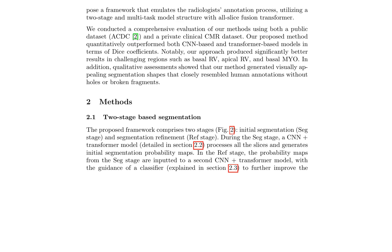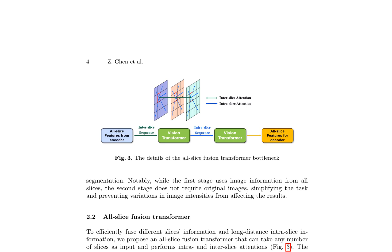The all-slice fusion transformer allows for efficient processing of entire volumes, capturing long-range dependencies and contextual information across slices, and is a critical component in the proposed architecture designed to efficiently fuse information from different slices and capture long-distance intra-slice dependencies. Placed at the bottlenecks of both the SEG and REF stages, this module combines U-Net with selective kernel convolutions and vision transformer. Images from all slices are concatenated along the batch dimension and fed into a CNN encoder, whose bottleneck features are then passed through two consecutive transformers performing inter-slice and intra-slice attention respectively. A CNN decoder with skip connections from the encoder produces the segmentation results.